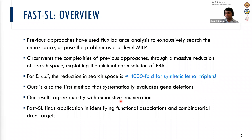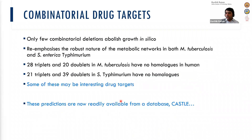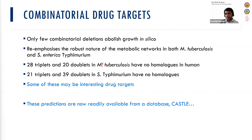The real use of FastSL is in identifying functional associations or combinatorial drug targets. In terms of combinatorial drug targets, only a few combinatorial deletions abolish growth in silico. Even though an organism may have 1,000 genes with roughly 1,000 choose 2 combinations, it turns out only a handful are actually interesting. We found about 28 triple gene deletions or 20 double gene deletions in Mycobacterium tuberculosis with no homologs in humans, making them potentially interesting drug targets. Similarly there are low doublets in Salmonella typhimurium with no homologs.